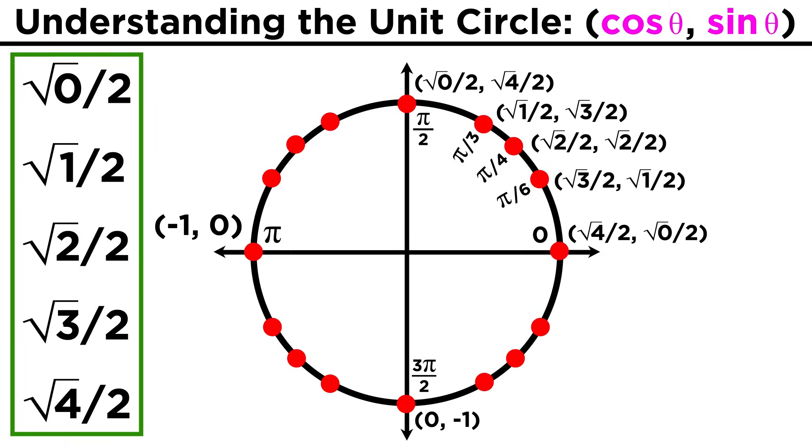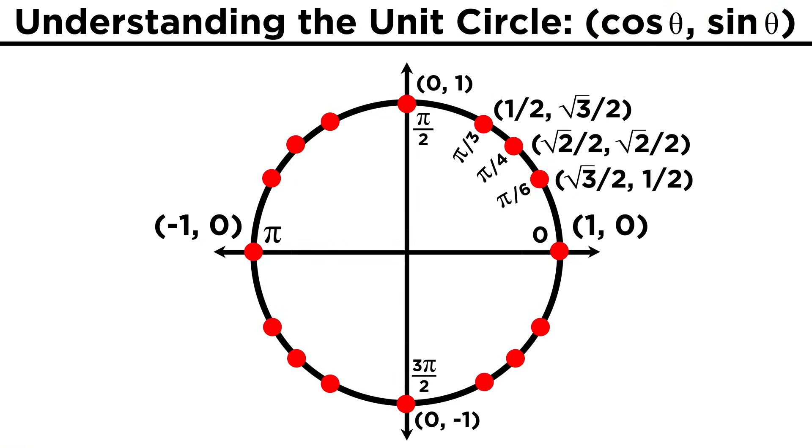So all we have to do is remember this one numerical sequence, and that the coordinates of each point take the form of (cosine θ, sine θ), and we will never forget any of these values. Let's return these values to their simplified forms, and then extend things into quadrant two.